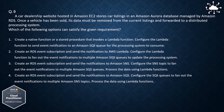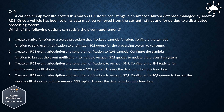Question 9. A car dealership website hosted on Amazon EC2 stores car listings in an Amazon Aurora database managed by Amazon RDS. Once a vehicle has been sold, its data must be removed from the current listings and forwarded to a distributed processing system. Which of the following options can satisfy the given requirement?